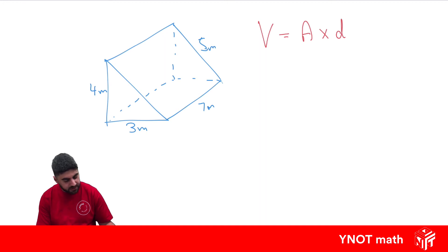So we're going to need half of the base times the height for the area, times the distance between them. That's a half times the base of the triangle is 3, and the height is 4.